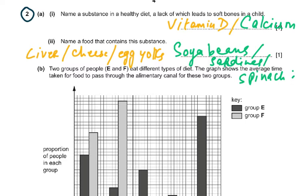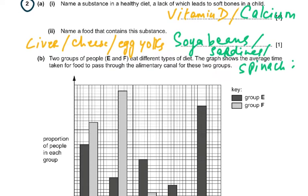Question 2a: name a substance in a healthy diet whose lack leads to soft bones in a child. The answers are calcium and vitamin D. For food sources: if you said vitamin D, examples are liver, cheese, and egg yolks; if you said calcium, examples are soya beans, sardines, and spinach.